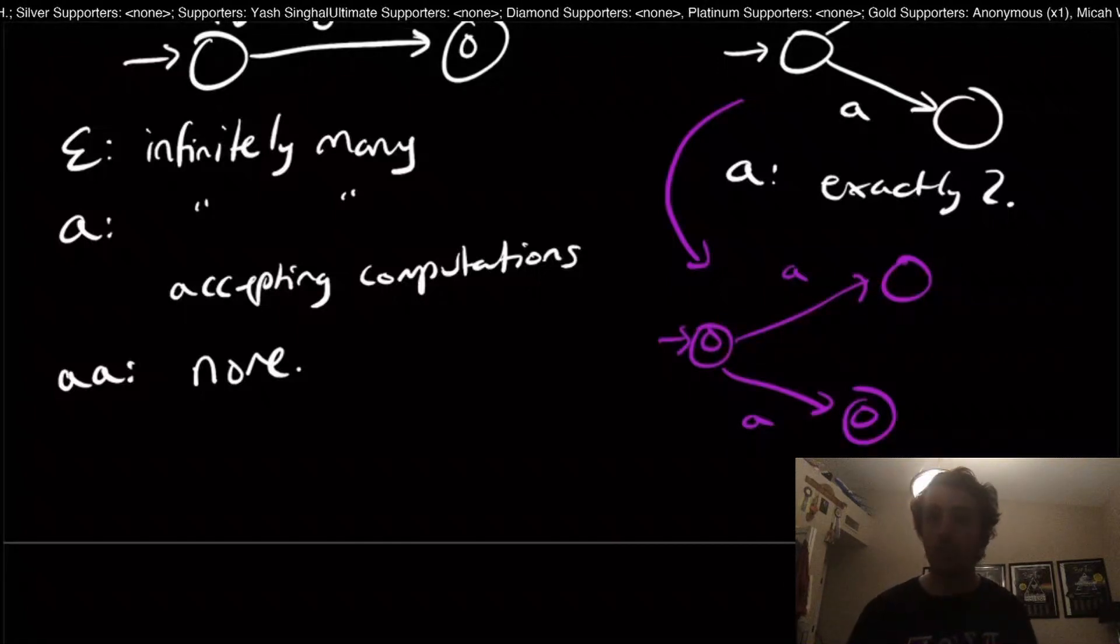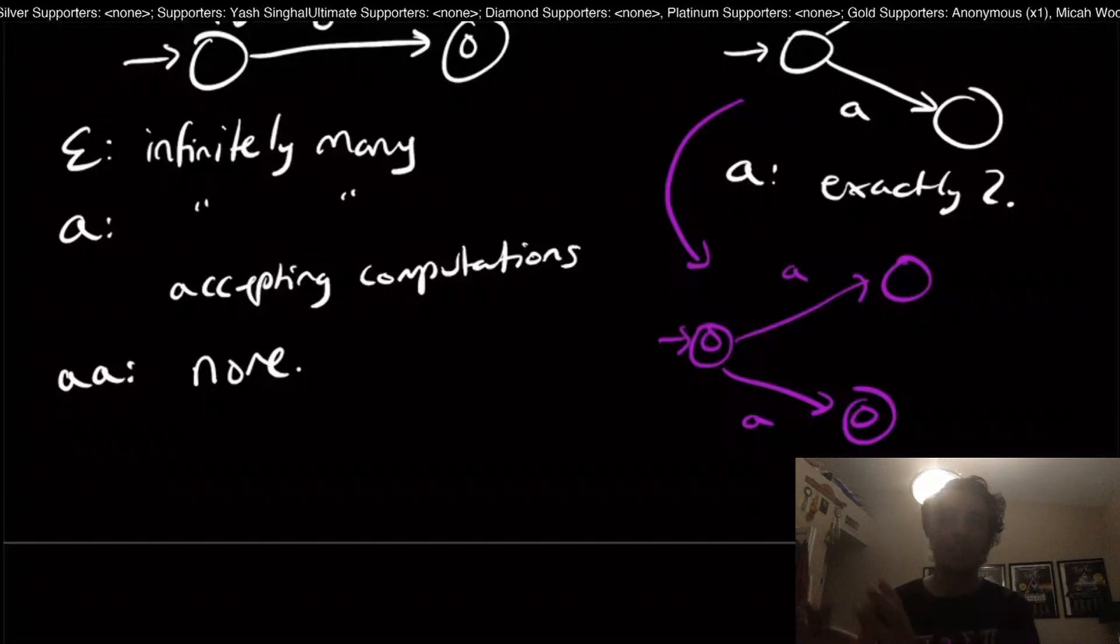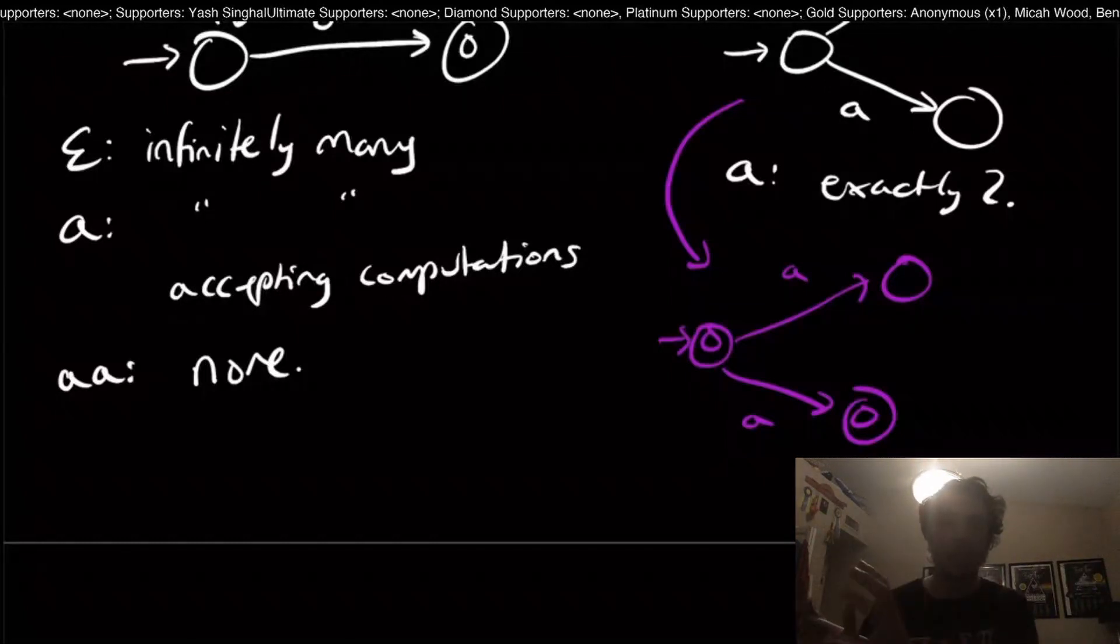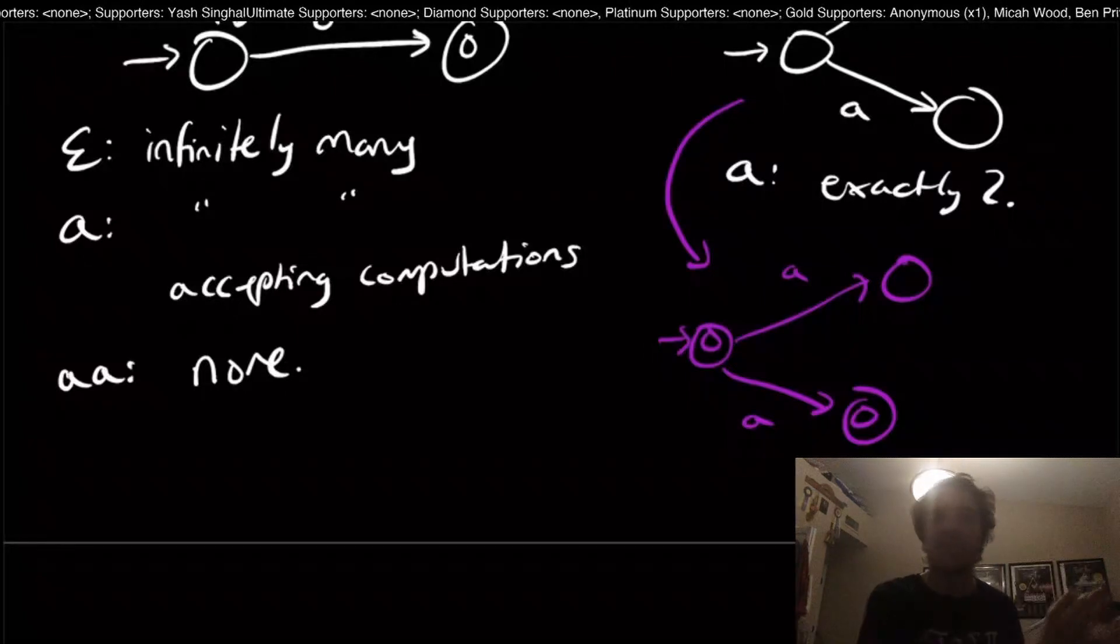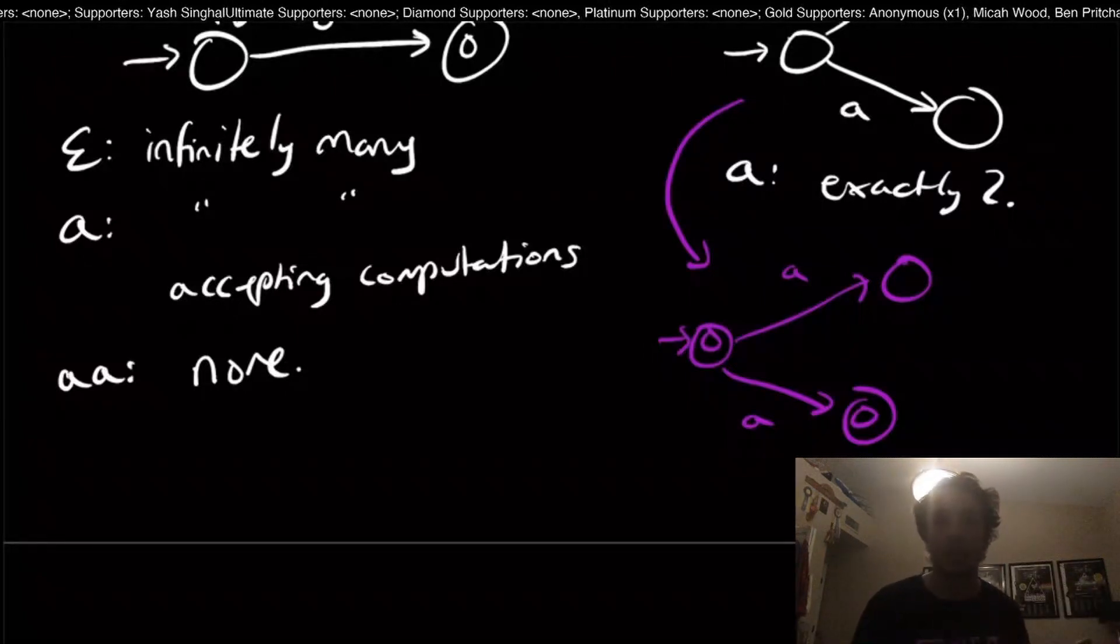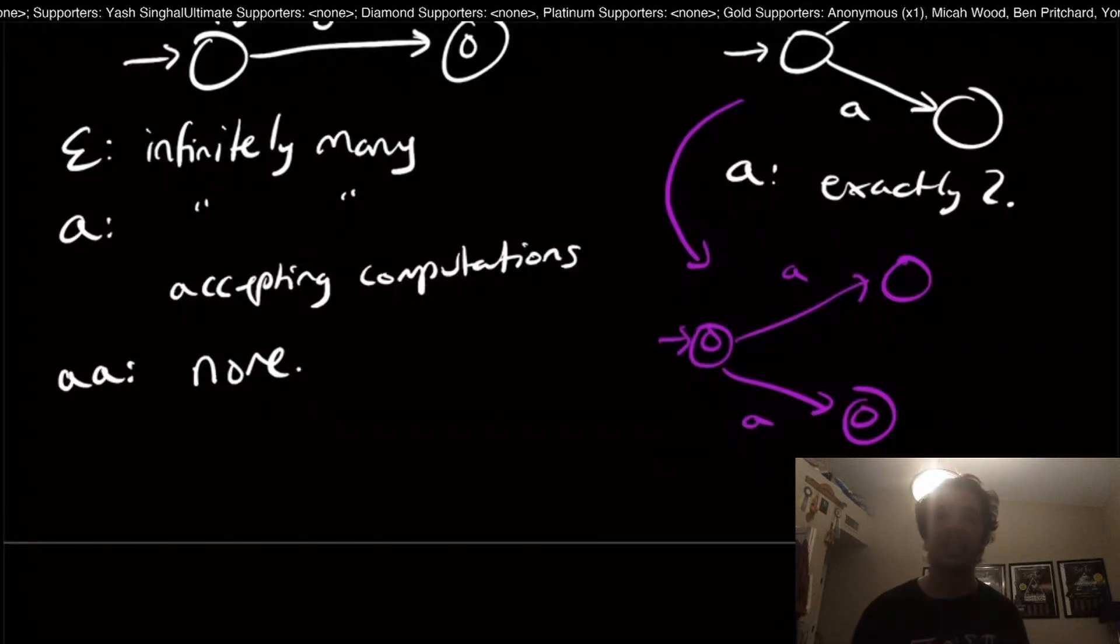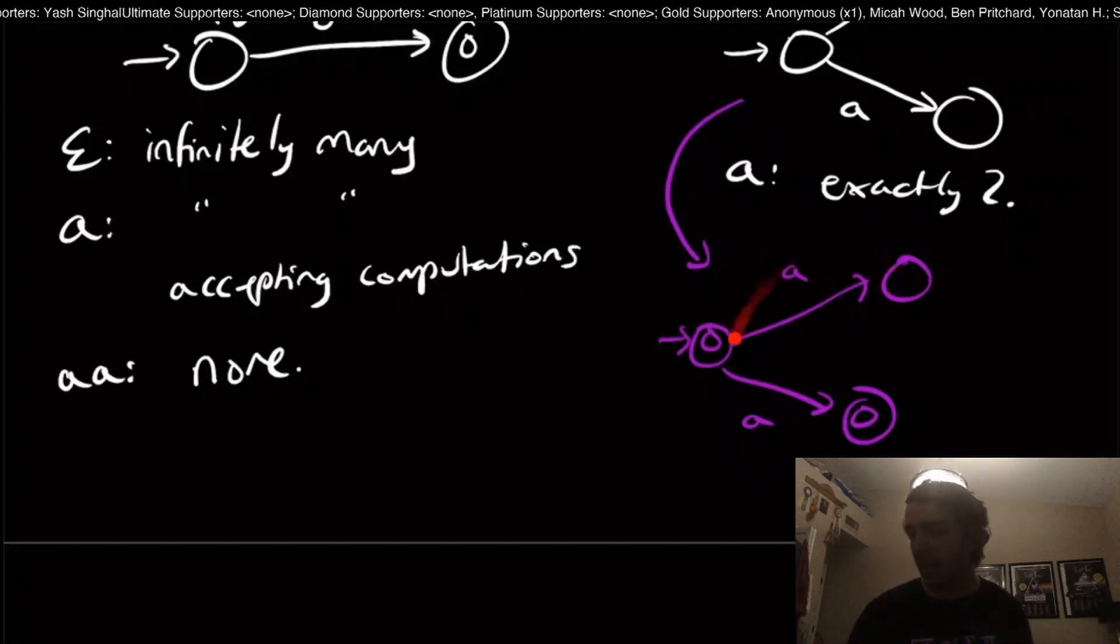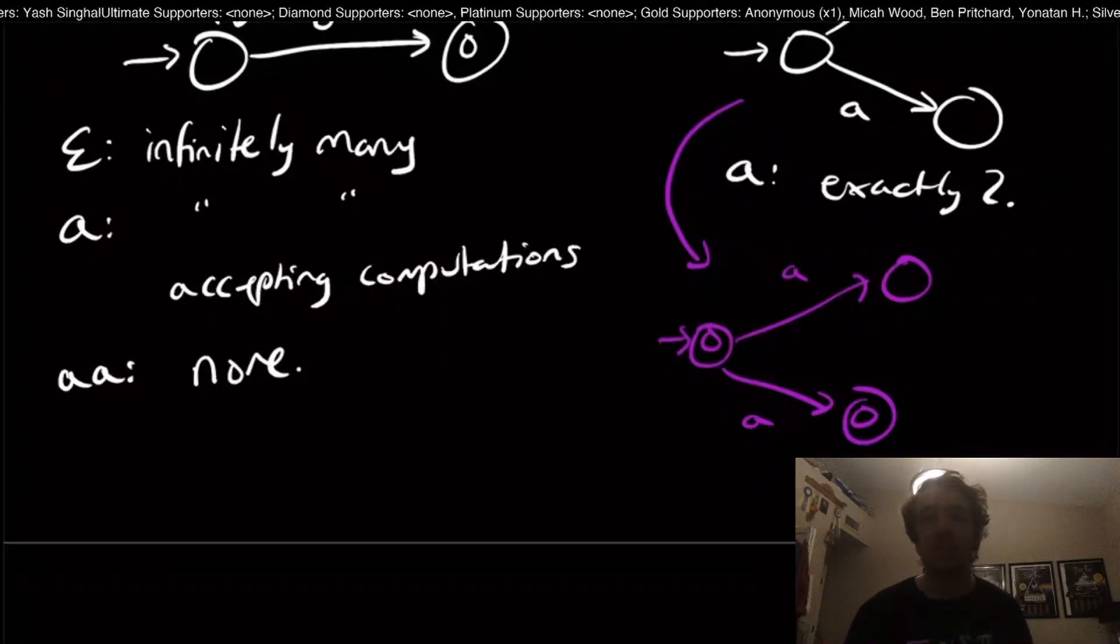That's one of the reasons why we talk about DFAs and NFAs because DFAs have a particular use case and NFAs also have a different particular use case. What we're going to be eventually seeing is are these two models really the same or are they different? Is there something that an NFA can recognize that a DFA can't?